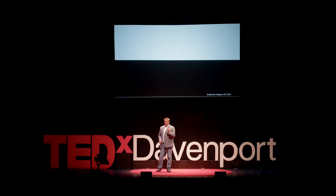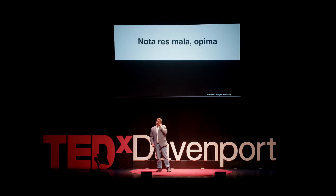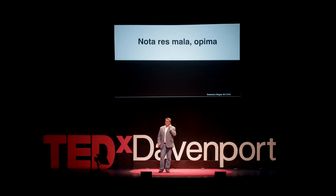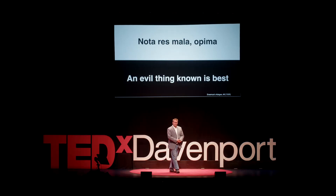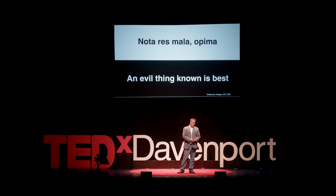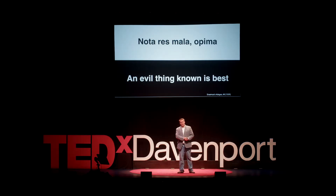So at the end of the day, I would tend to go back to the 1500s: 'Notores mala' — an evil thing that is known is best. Markets aren't going to disappear overnight, even if we were able to get rid of the dark web. We're probably better off with the devil that we know than the devil that we don't.